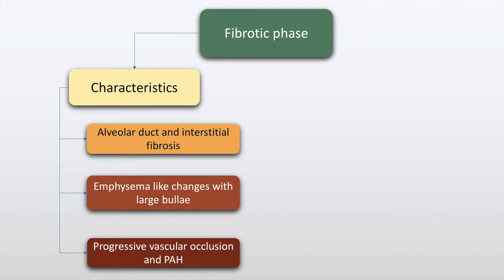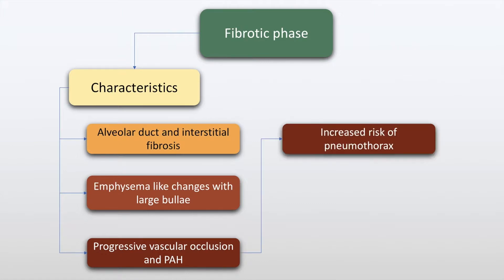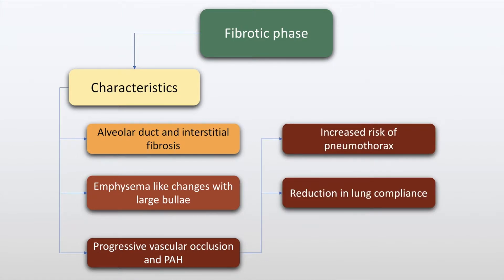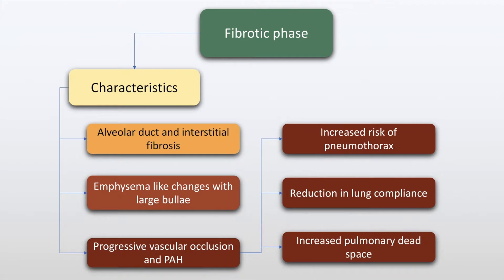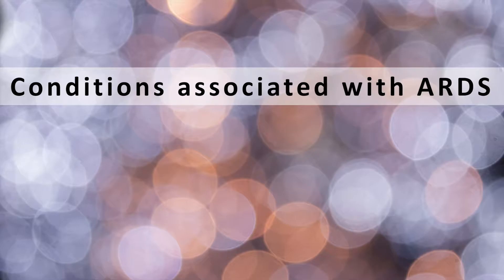There may be progressive vascular occlusion and pulmonary arterial hypertension. This vascular occlusion increases the risk of pneumothorax, reduces lung compliance, and increases pulmonary dead space.